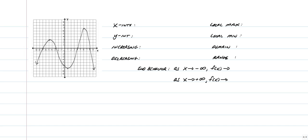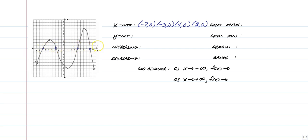Alright, we'll go through this one just a little bit quicker. Our x-intercepts — you should have had four of them. We had negative seven comma zero, negative three comma zero, four comma zero, and eight comma zero, every time it crossed the x-axis. Our one and only y-intercept would be zero comma negative six, because that's where it touches the y-axis.